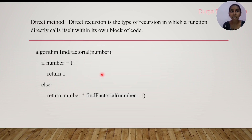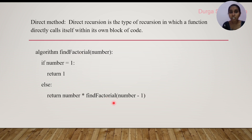Direct recursion is when a function calls itself. Here we have a function named find_factorial. Inside this function we are calling find_factorial again. This type of function is known as direct recursion.